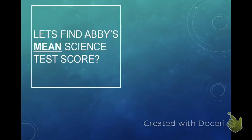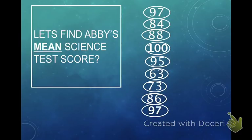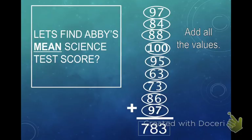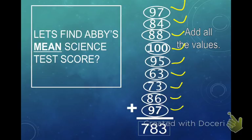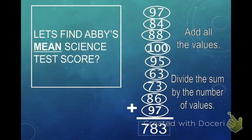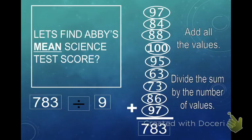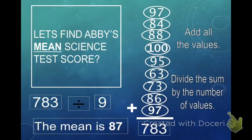Let's do an example. We're going to find Abby's mean science test score. Here are her science tests. All we have is all of her scores. The first thing we're going to do is add all of those values — and you can use a calculator for this. If you added them up, you're going to get 783. Now, how many tests did she take? Every circle on there is a test, so let's count: 1, 2, 3, 4, 5, 6, 7, 8, 9 — she took 9 tests. So we take that 783 and divide it by 9, which gives you 87. And 87 is your mean, or her average score.